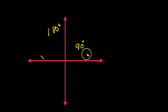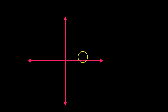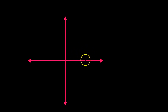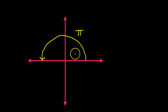But recently, we learned a new way to measure angles, and it was called radians. Radians don't actually have units. The basic measure of a semicircle — what we know is 180 degrees — in radians, this angle is pi, simply pi.